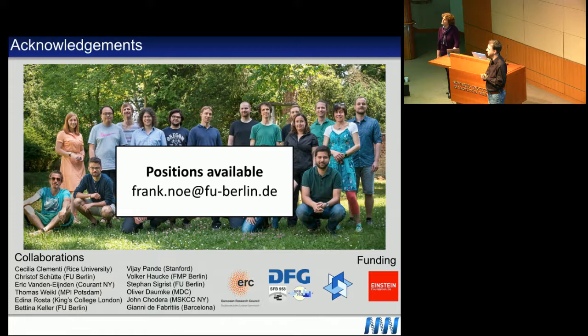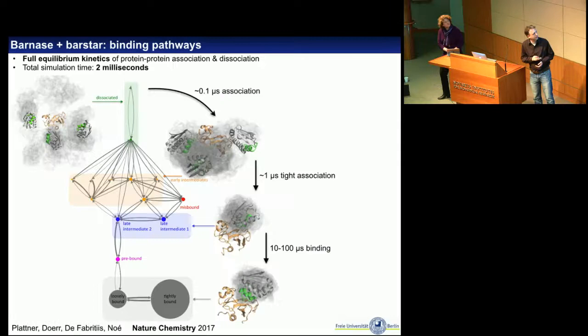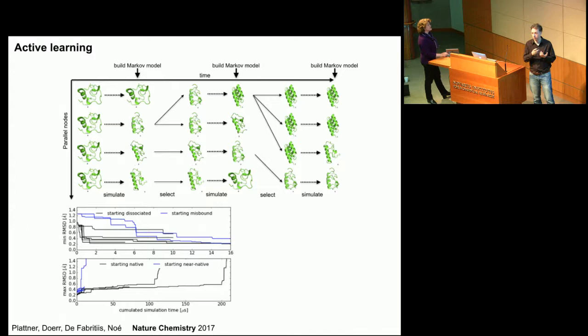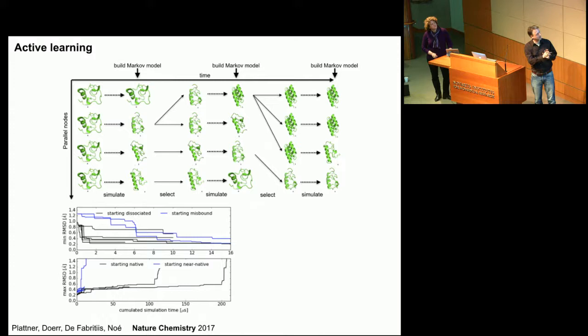Final question: to show that we can find the bound state — did you start from the bound state? Speaker response: this plot shows the root mean square distance to the native complex. Starting large and converging to around two angstroms means we find the native complex — the minimum over all simulations just decreases. And starting from the native complex, in a hundred microseconds total aggregate simulation time, we dissociate. So this shows you can truly associate and dissociate for this problem.